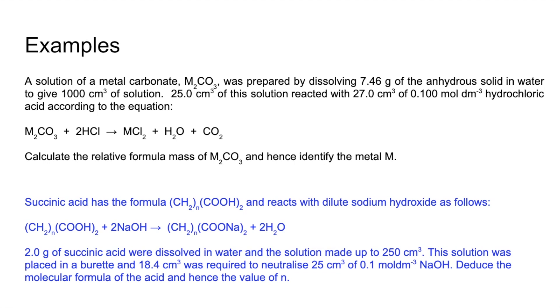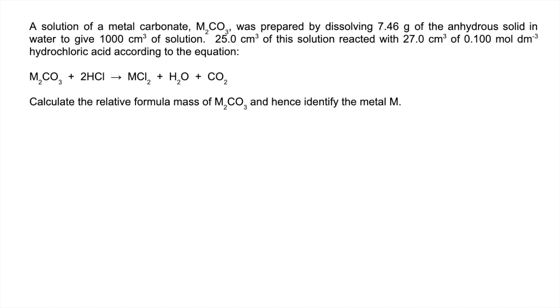There's a couple of examples if you wanted to pause the video and try them, then play on when you're ready for the answers. So the first one: we've got to calculate the relative formula mass of M₂CO₃ and then identify the metal M. We've got the mass, so to get the MR we need to know how many moles are in that 7.46 grams. That's what we're heading for with this calculation.